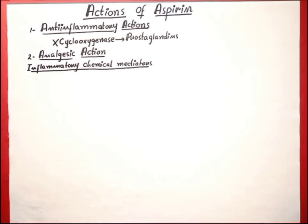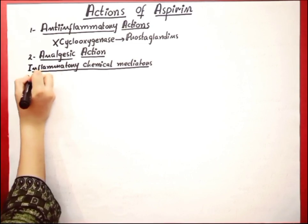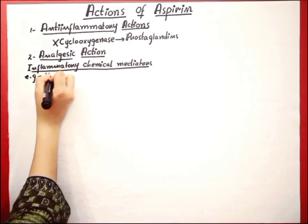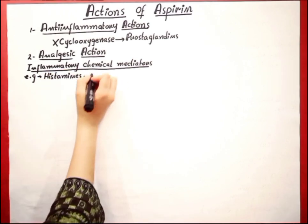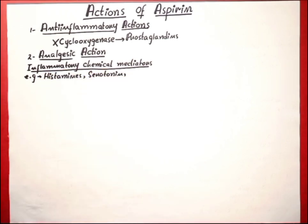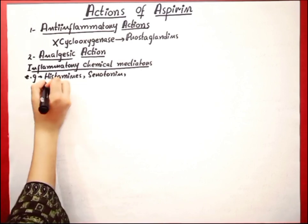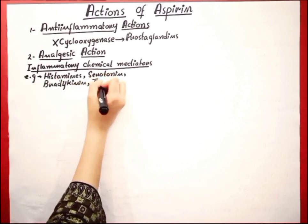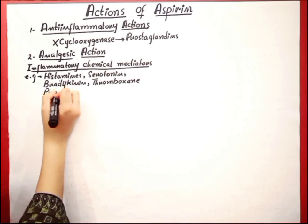Inflammatory chemical mediators are chemical agents which are released after inflammation, during the process of inflammation. Some examples are histamine, serotonin, bradykinin, thromboxane, and prostaglandins.